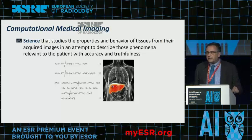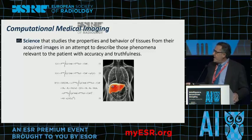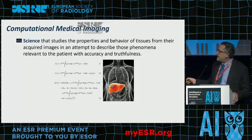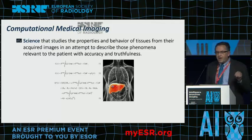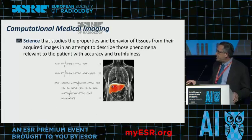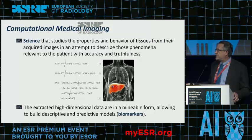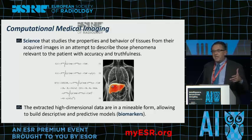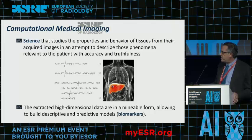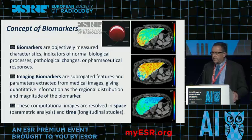The way to achieve this is through a computational approach. Computational medical imaging is a science and methodology that evaluates the properties and behaviors of tissues from their images, trying to describe things that are relevant to the patient at a specific time in the disease — with both accuracy and truthfulness. We do this by asking tissues and lesions through computerized modeling, trying to extract high-dimensional data in a minable form, allowing us to build descriptive and predictive models called biomarkers.